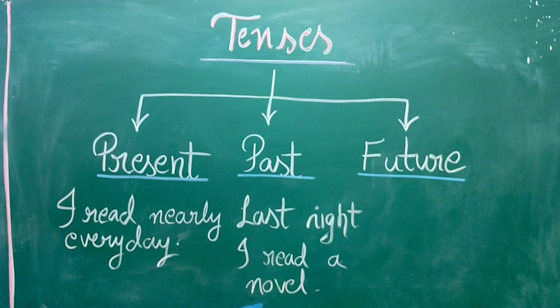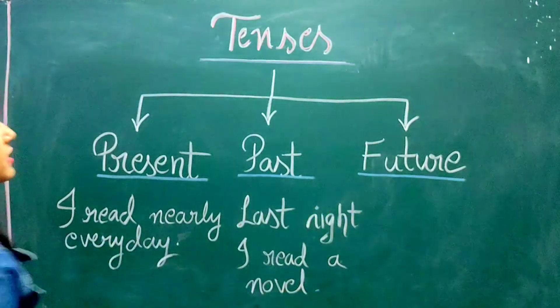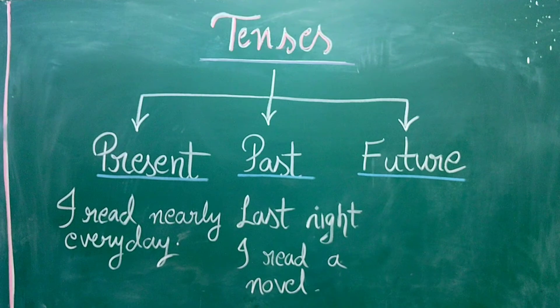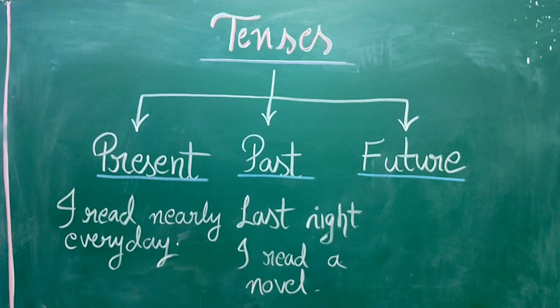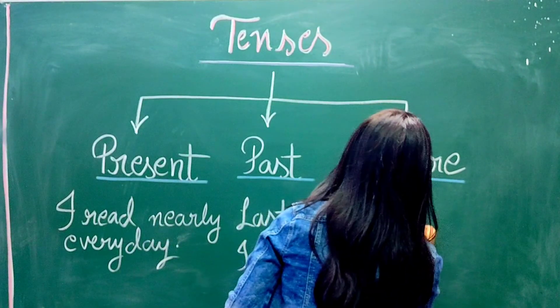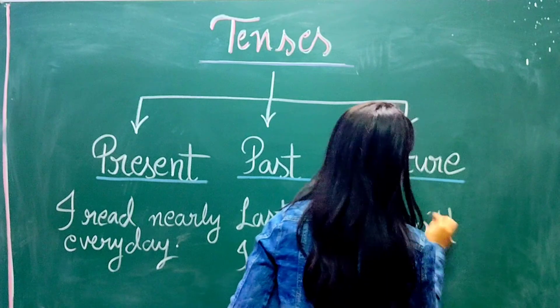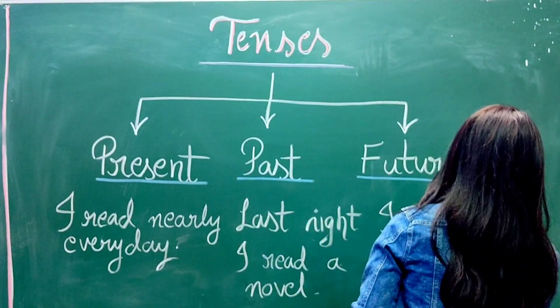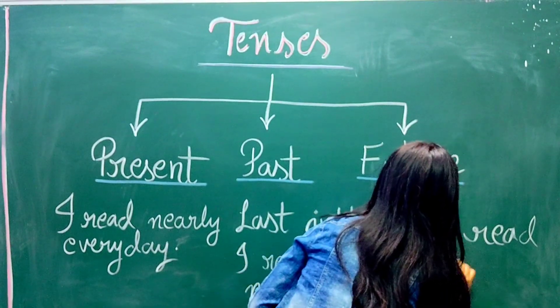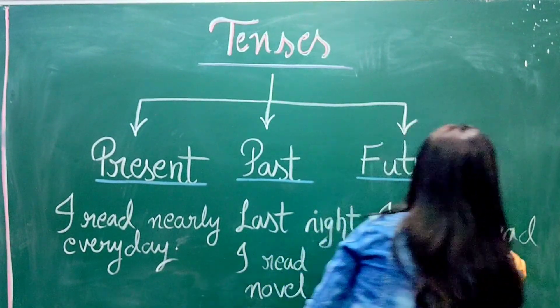Now, the future tense describes the things that are yet to happen. Something that is going to happen in future. Like tomorrow, or after an hour, or after a week, and so on. For example, I will read a comic tomorrow.